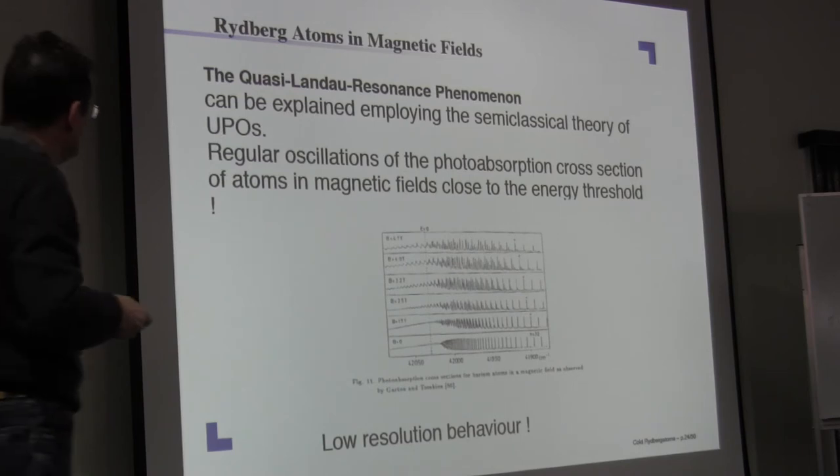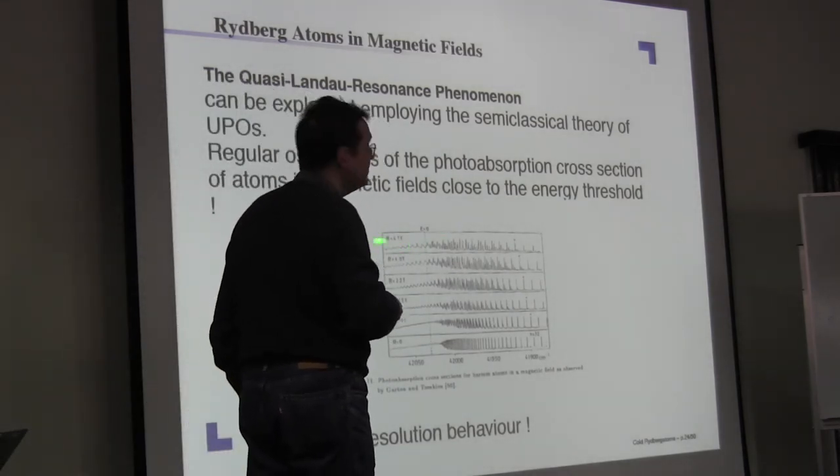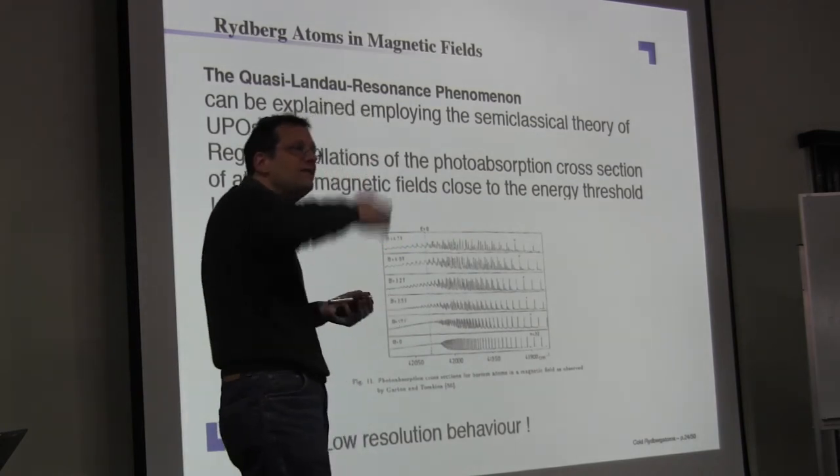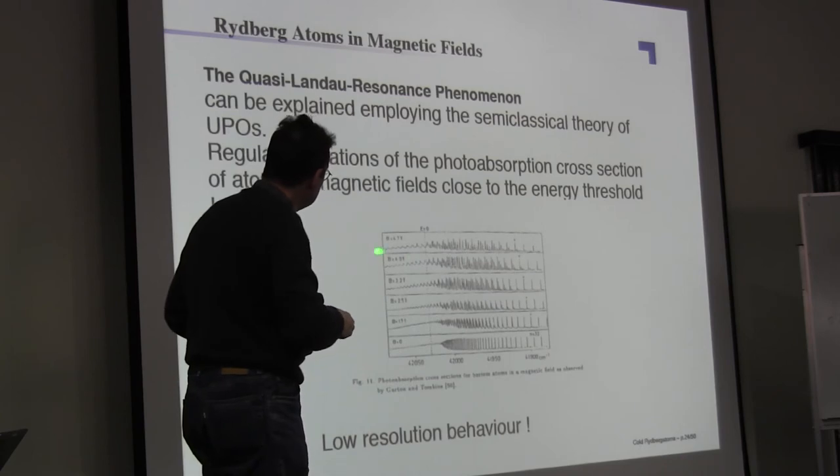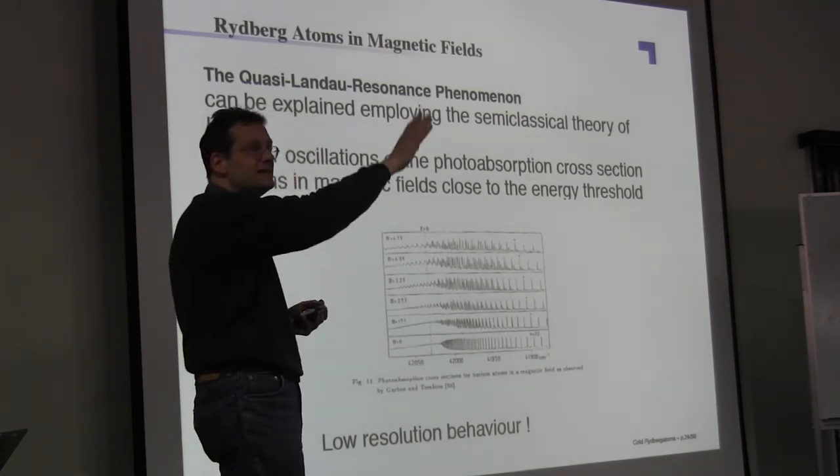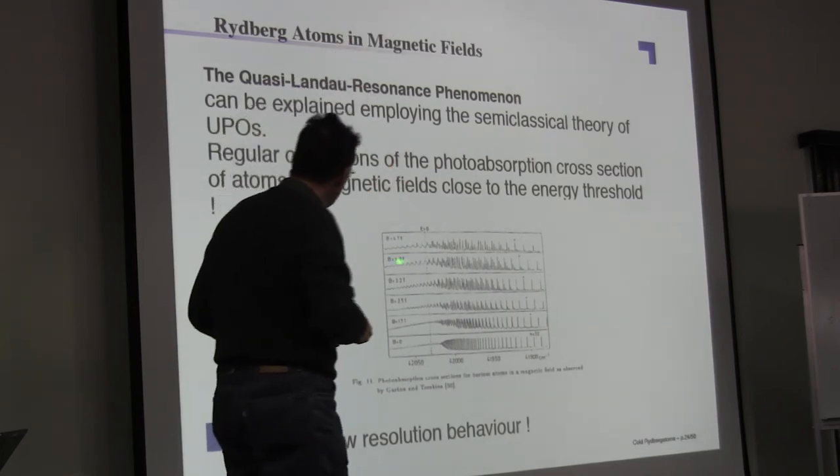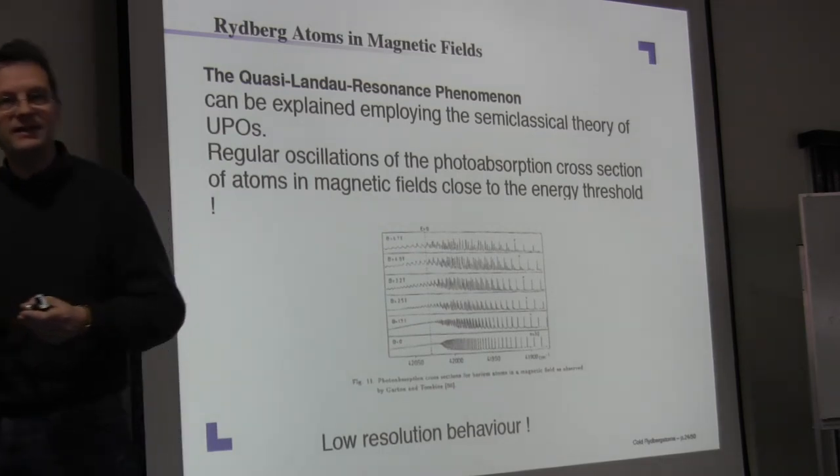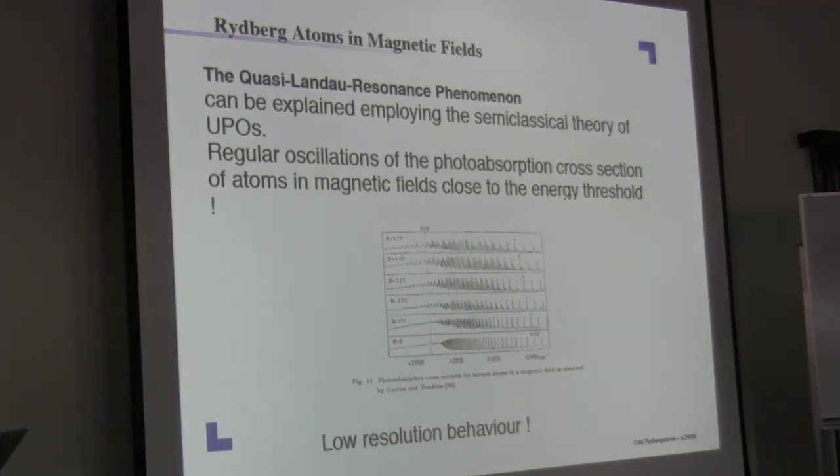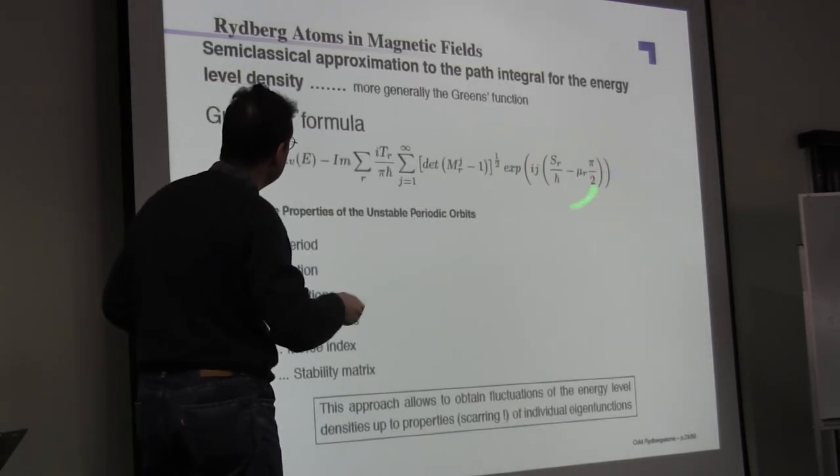If you would resolve all the details here, which means all the levels that are close to threshold, it would be a mess. You would not see these oscillations. It would be a complete mess of thousands, hundreds of thousands, millions of levels. But at low resolution you get these oscillations. And this you can trace back to certain unstable periodic orbits which immediately give you, if you quantize them according to these formulas, which give you these oscillations with varying energy. So this can be nicely explained as a semi-classical phenomenon.